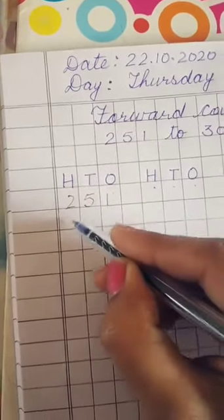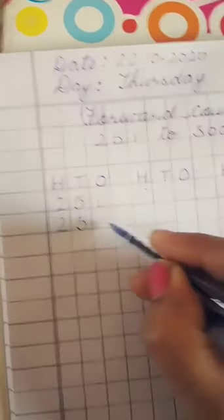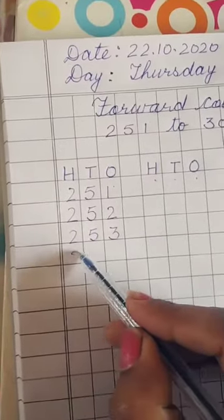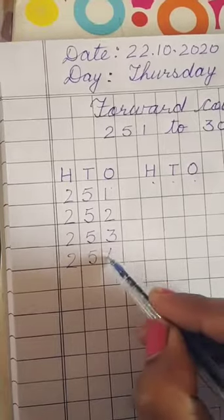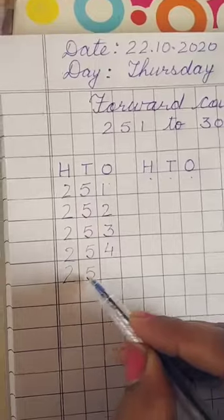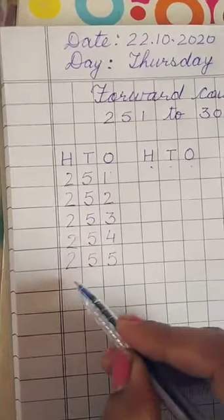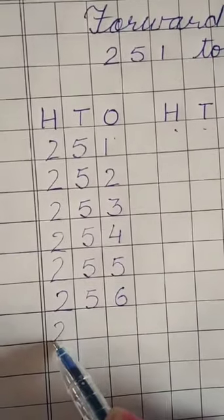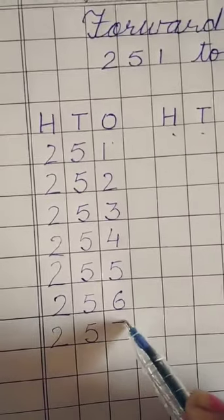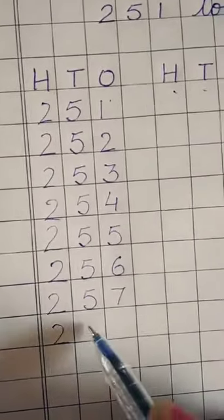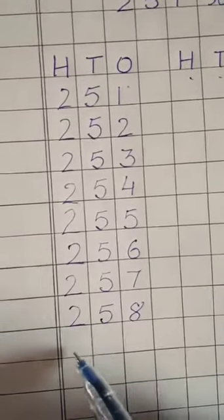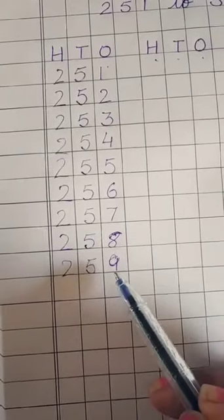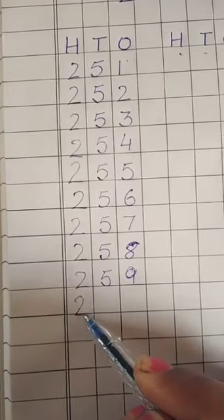So let's start. 251, 252, 253, 254, 255, 256, 257, 258, 259. And which number comes after 259?